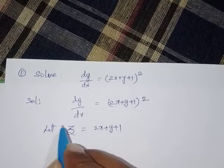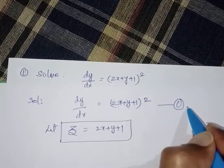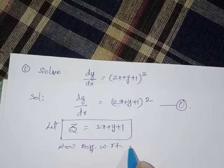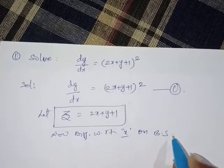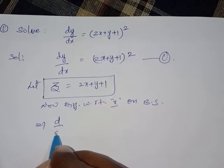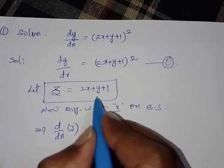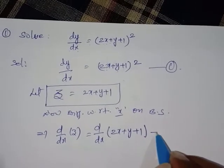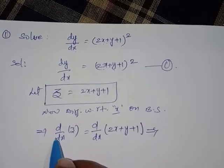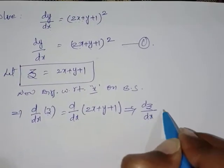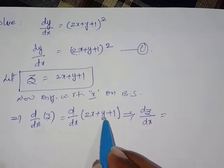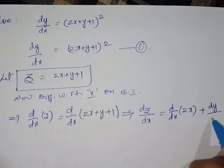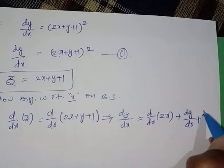Consider z = 2x + y + 1 as equation number 1. Now differentiate both sides with respect to x. The left-hand side gives d/dx of z, which is dz/dx. The right-hand side is d/dx of (2x + y + 1). Split the differentiation into three parts: d/dx of 2x, plus dy/dx, plus d/dx of the constant.